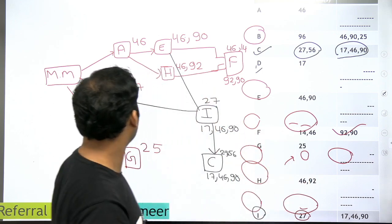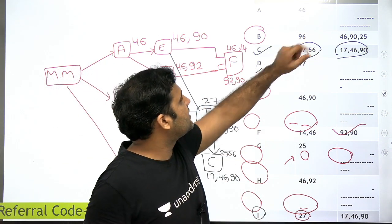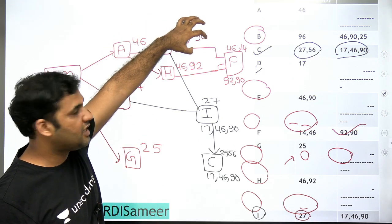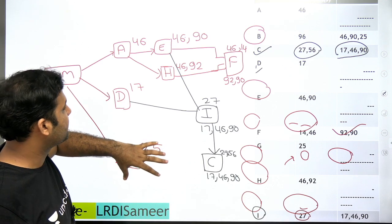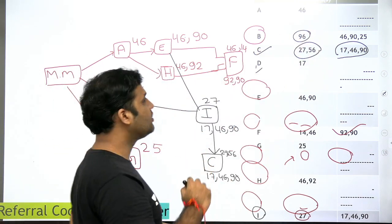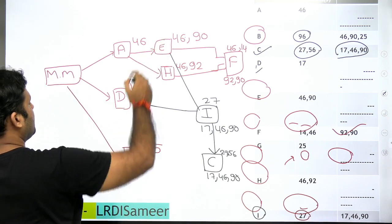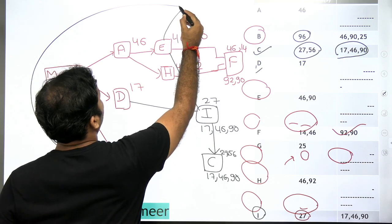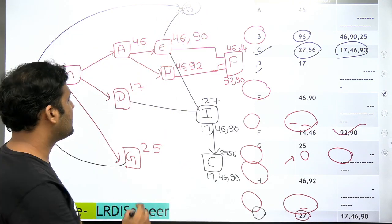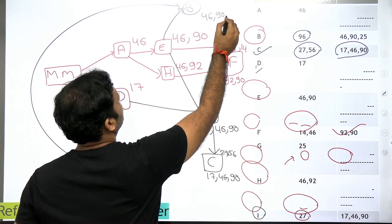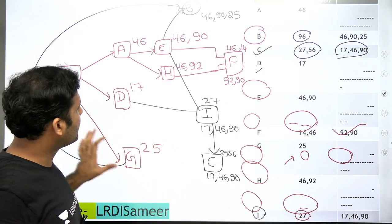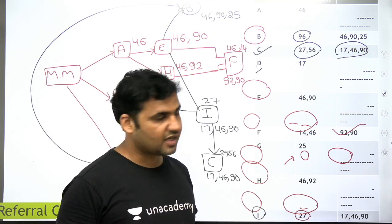Now you are left with only B. B has question 96 wrong, and 46, 90, and 25 are blank. E has 46 and 90 wrong, and G has 25 wrong. That means B took the answer key from both E and G, which is why 46, 90, and 25 are blank — because E and G give different answers on those. B introduced question 96 as wrong themselves. So we now know the complete flowchart, and you can answer all the questions in the set.